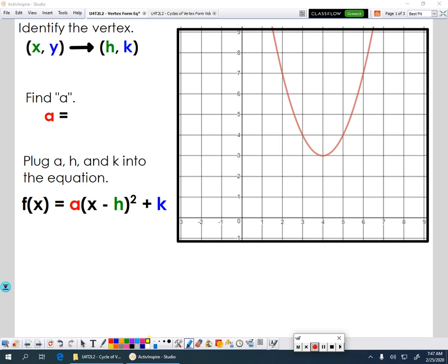We're going to look at how you write a vertex form equation when you're given a parabola. Now remember, in a vertex form equation, we need to find a value for a, and h, and k. And once we have those three values, all we need to do is plug them in.